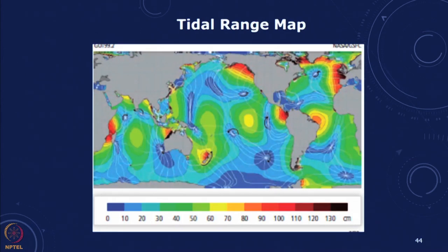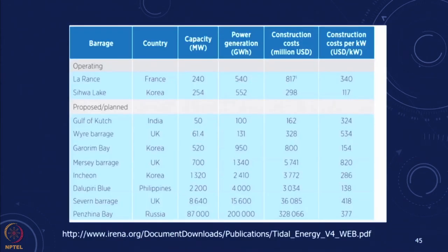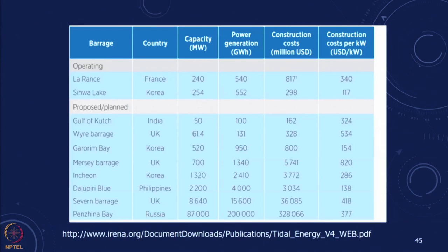In India, there is a plan to build a tidal plant off the coast of Sundarbans in the Bay of Bengal, and also at the Gulf of Kutch. The largest tidal plant is the La Rance in France, which is 240 megawatts and has been operational for decades and is also a tourist attraction. There is a recent one built in Korea at Sihwa lake, about 254 megawatts.